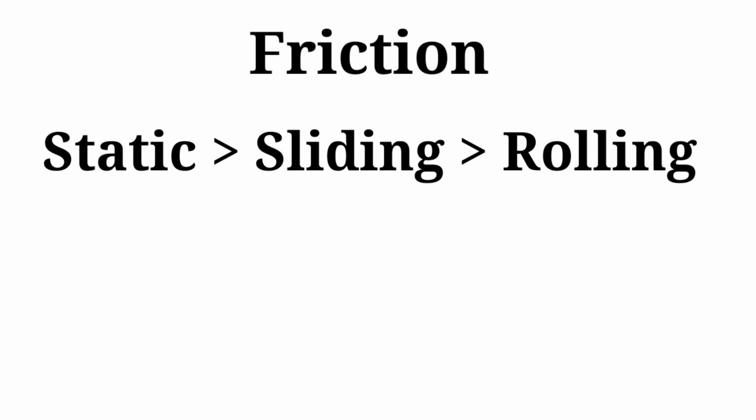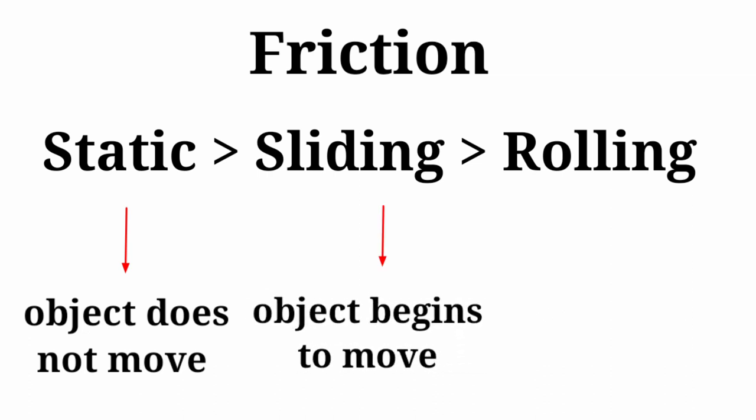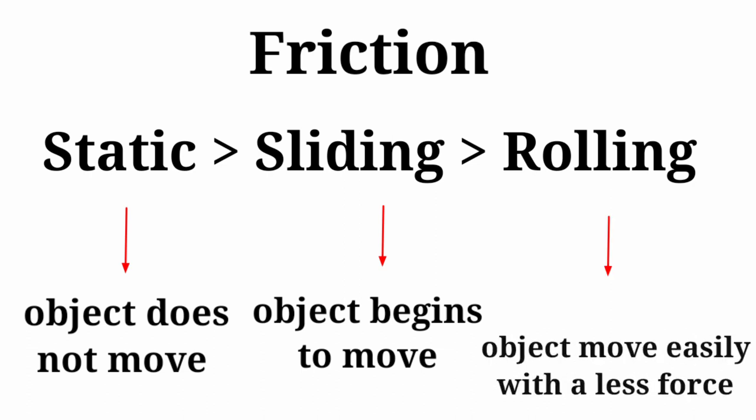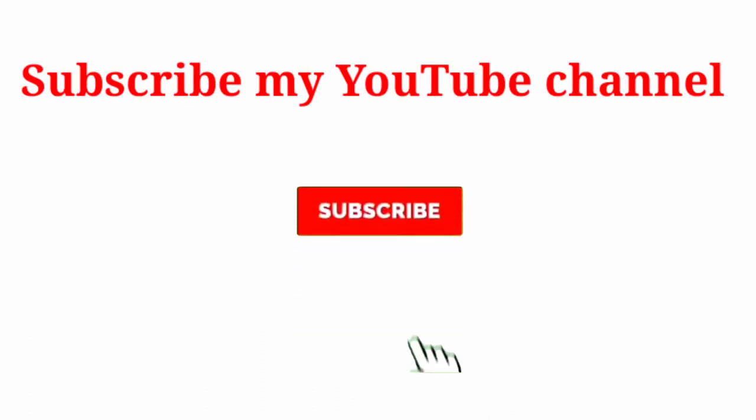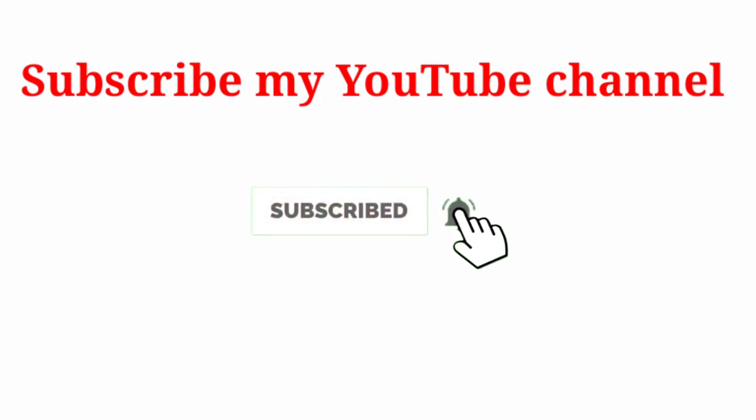Static friction is greater than sliding friction, which is greater than rolling friction. In case of static friction, the object does not move. In case of sliding friction, the object begins to move with a uniform speed. And in case of rolling friction, the object moves very easily with a less amount of force applied on it.